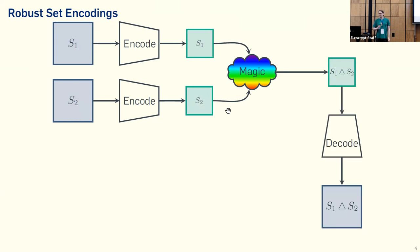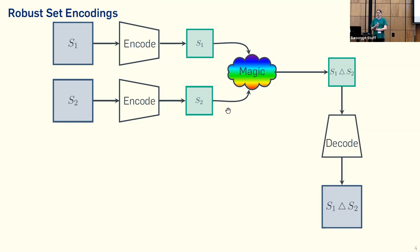The trick is that we might be able to actually decode this symmetric set difference. In general, this should not be possible because the encoding function is compressing — the encoding of S1 should be smaller than S1 itself, otherwise it's not a useful hash function. And the symmetric set difference of two sets can actually be larger than each individual set. So if it's already compressing for S1 and S2, we should not in general be able to decode the symmetric set difference.